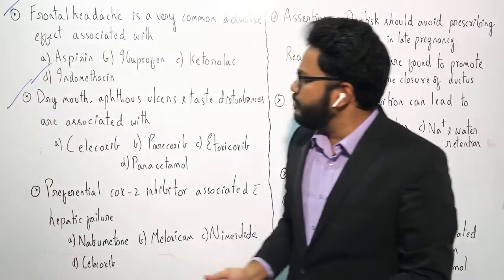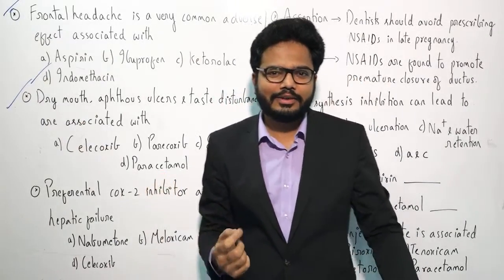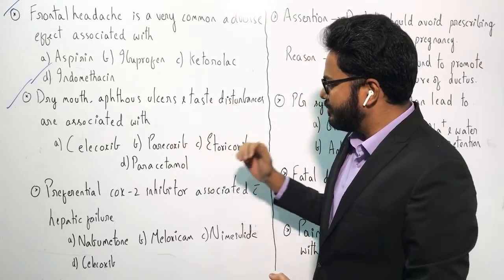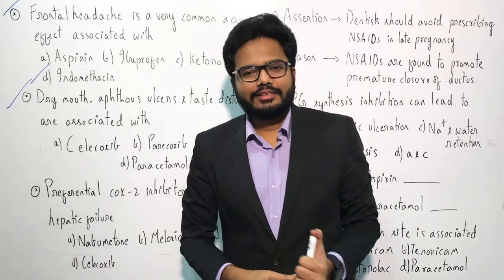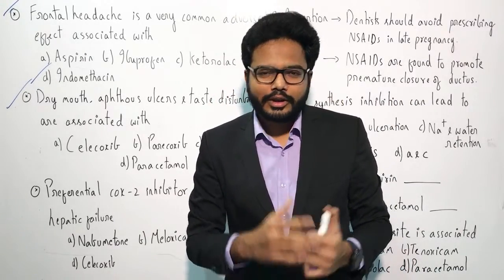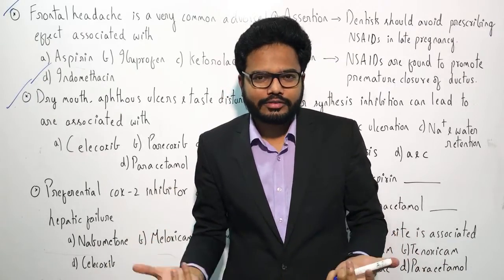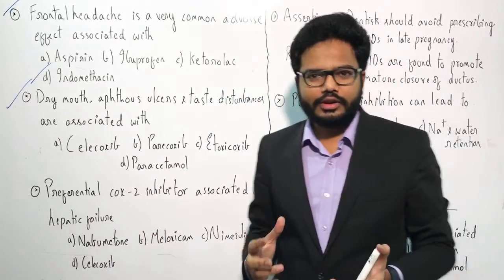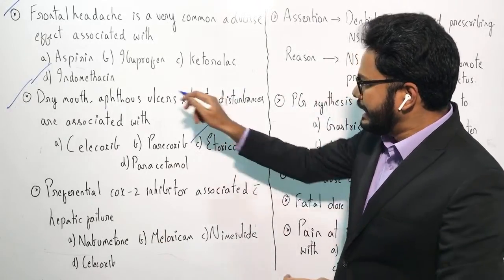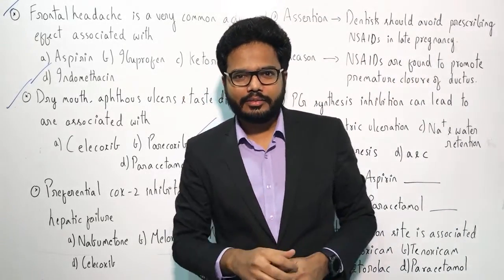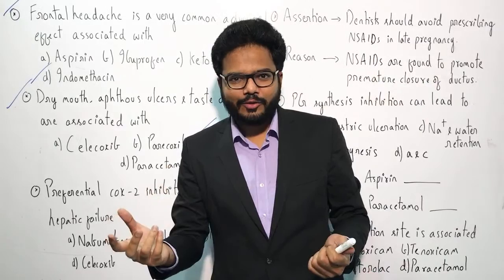Next question: dry mouth, aphthous ulcers, and taste disturbances including paresthesias are associated with which of the following — celecoxib, parecoxib, etoricoxib, or paracetamol? The answer is etoricoxib. When you try to eat something you can't enjoy your food because you're having ulcers and dry mouth — 'eat it or coxib.' Etoricoxib is a selective COX-2 inhibitor with adverse effects of dry mouth, taste disturbances, paresthesias, and aphthous ulcers.